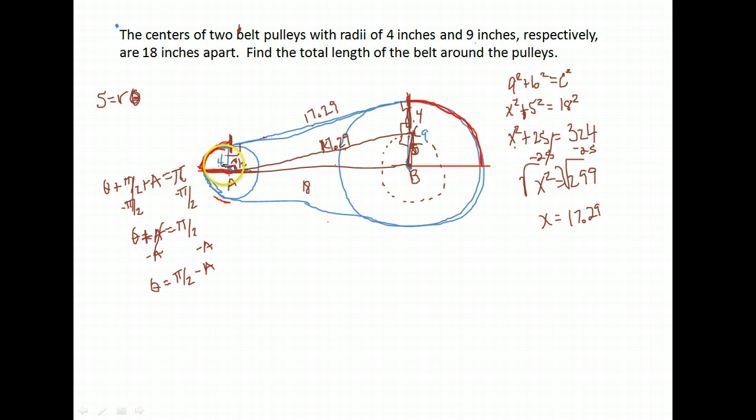So I need to find angle A so I can find the θ for this angle here. Then I'll be able to find this arc length. How can I find the measure of that angle? I'm trying to look for the measure of angle A right here.